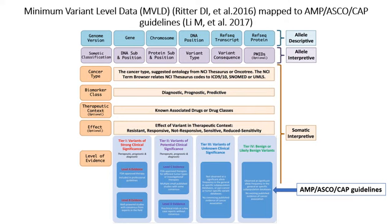In order to streamline the curation and reporting of somatic variants in cancer, the somatic cancer CDWG developed a consensus-based framework called the Minimum Variant Level Data, or MVLD. This framework consists of three sections: allele descriptive, allele interpretive, and somatic interpretive, as you can see on the right-hand side of this figure. The allele descriptive section contains data elements that describe the genome position, the gene, chromosome, genomic location, and reference transcript and protein information.